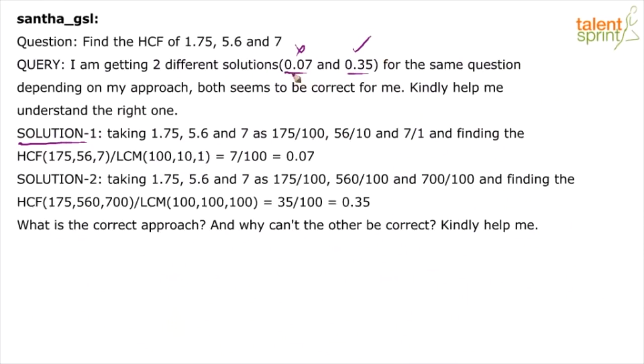And anyway, when you have got two right answers, since we are talking about HCF, highest value, right? Highest common factor, which is higher of 0.07 and 0.35? 0.35. So, going by that logic, you should have marked 0.35. But let me tell you why 0.07 is wrong. Let me see the second solution first.